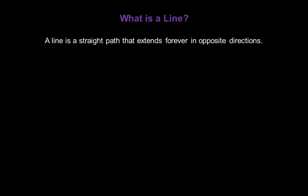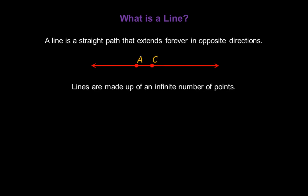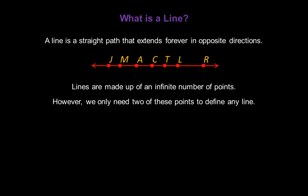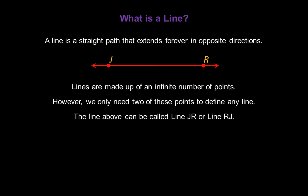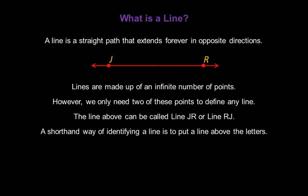What is a line? A line is a straight path that extends forever in opposite directions. Lines are made up of an infinite number of points. However, we only need two of these points to define any line. The line above can be called Line JR or Line RJ. A shorthand way of identifying a line is to put a line above the letters. We could call this line JR with a line symbol above it, or swap the letters and put RJ with the line symbol above it.